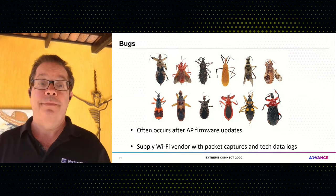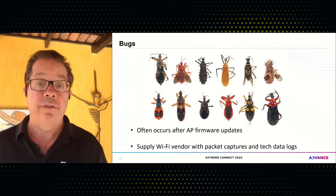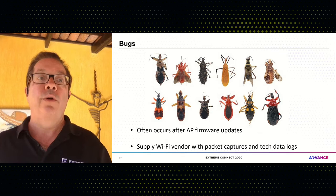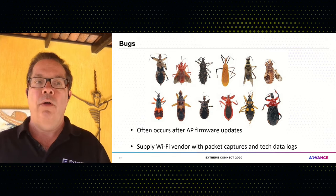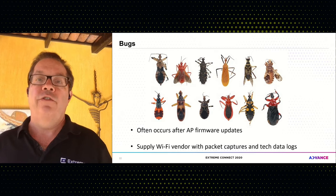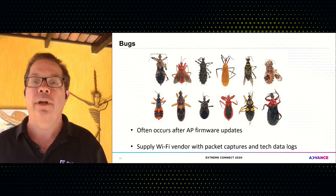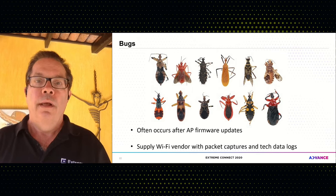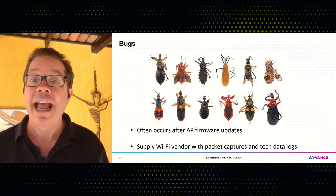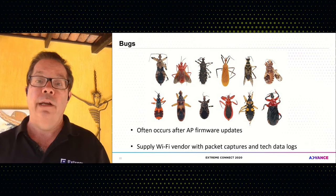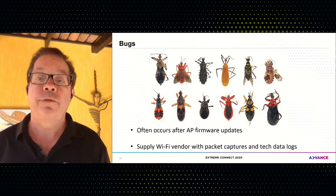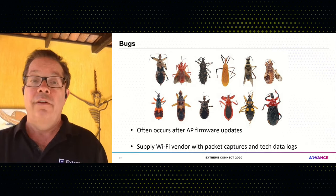Bugs are a layer one problem and often occur after a vendor's AP firmware updates. Companies like Xtreme do a lot of regression testing to make sure original functionality continues to work with new code, but nobody is 100% bug free. We identify and squash bugs fast when they are found, and do a good job catching them before they happen. If you're running into a bug, that's when you work with GTAC. Supply your Wi-Fi vendor with packet captures, and from Xtreme Cloud IQ there's a simple way to extract the tech data logs from any access point.